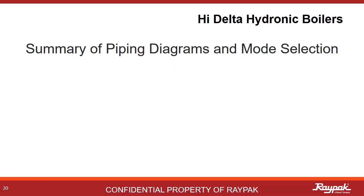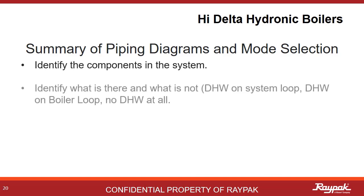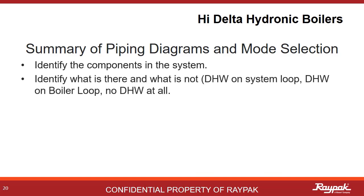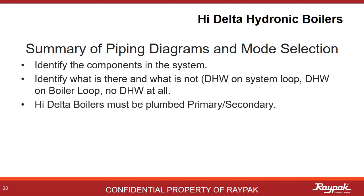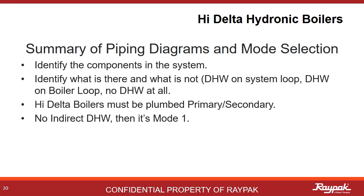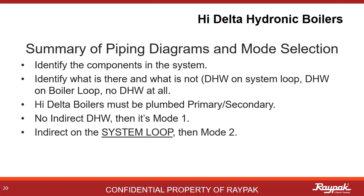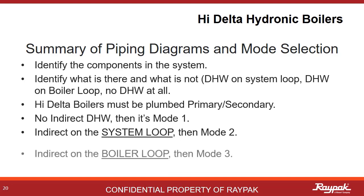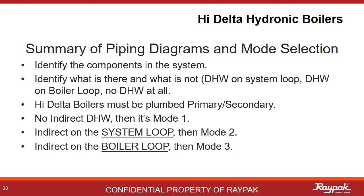Here are some overall pointers on plumbing systems and how they relate to mode selection for Type H boilers. Identify all of the parts of the system — look for what is there as well as what is not there. Make sure it is plumbed primary-secondary. In most cases, with no indirect domestic hot water present, Mode 1 will be your choice. If you have an indirect domestic hot water present on the system loop, then it's Mode 2. If the indirect domestic hot water is present on the boiler loop, then it's Mode 3.